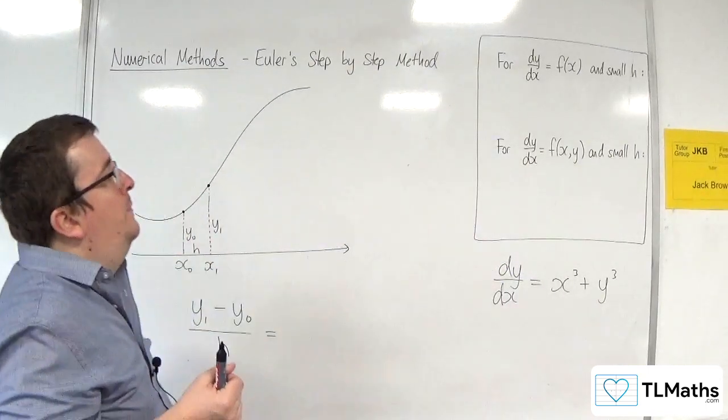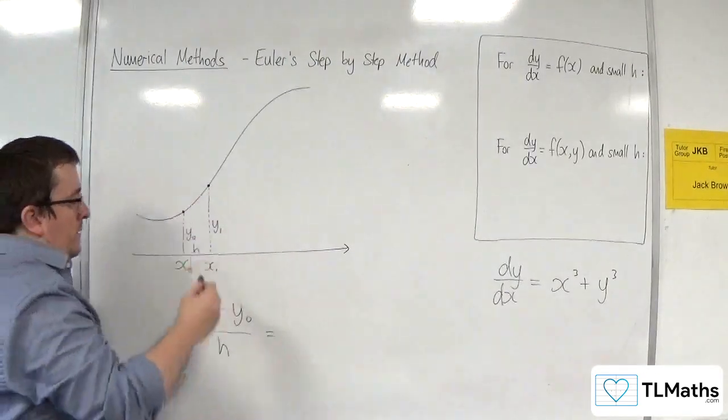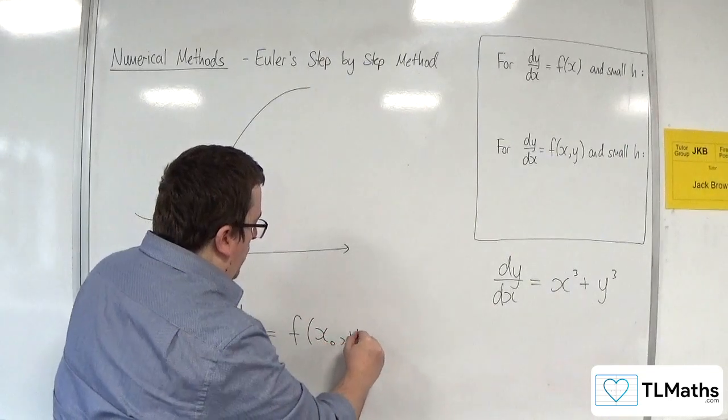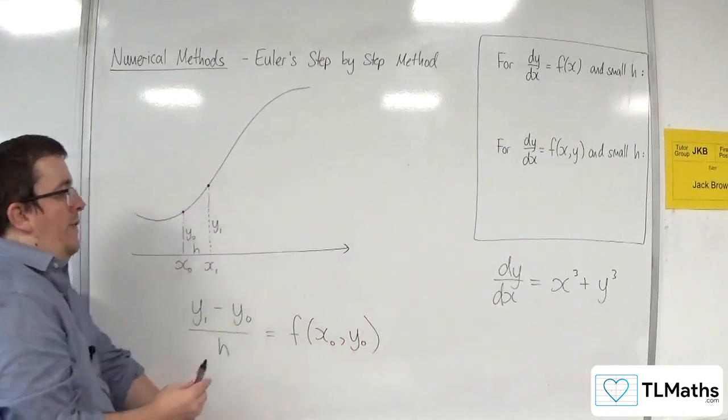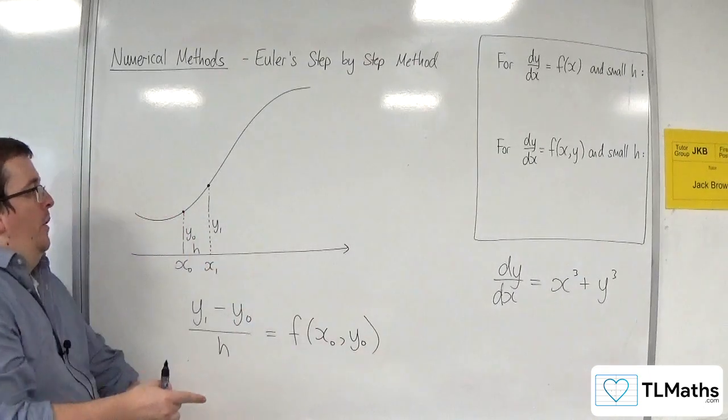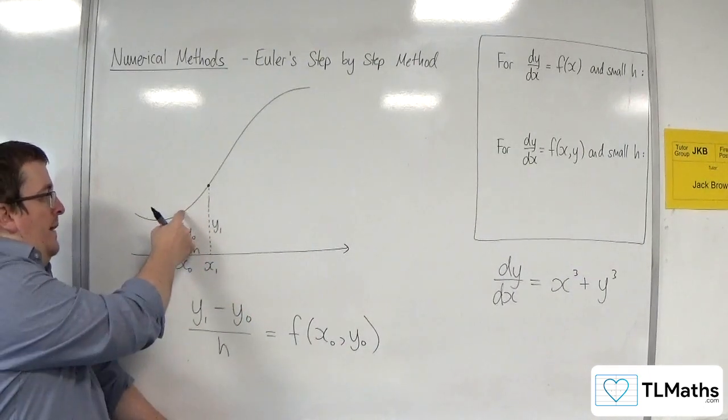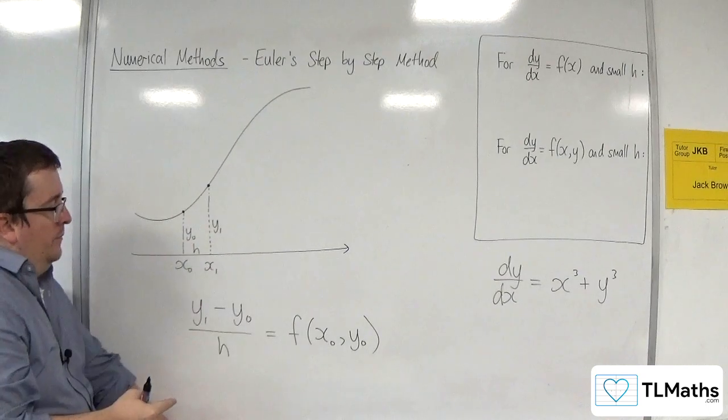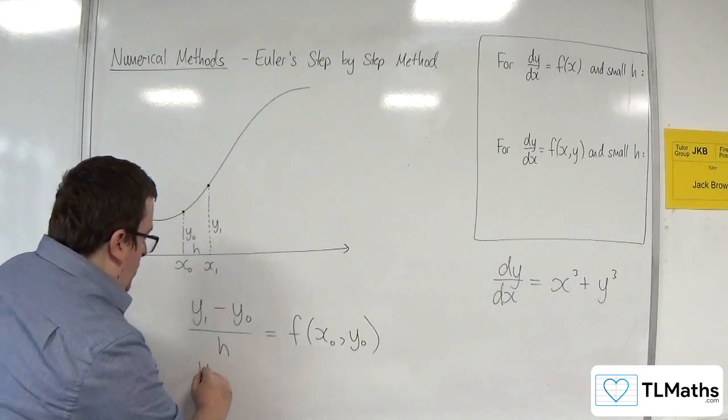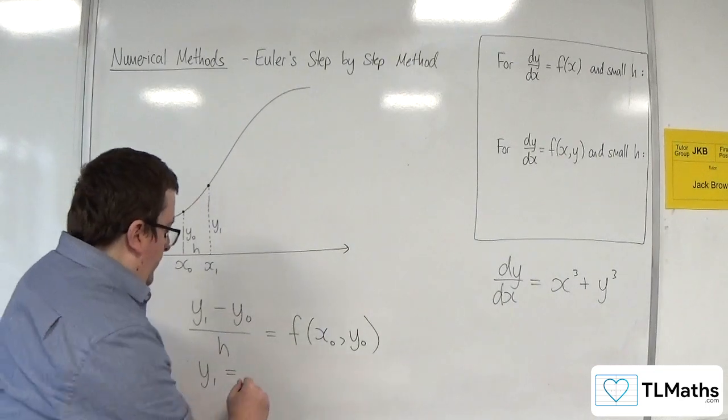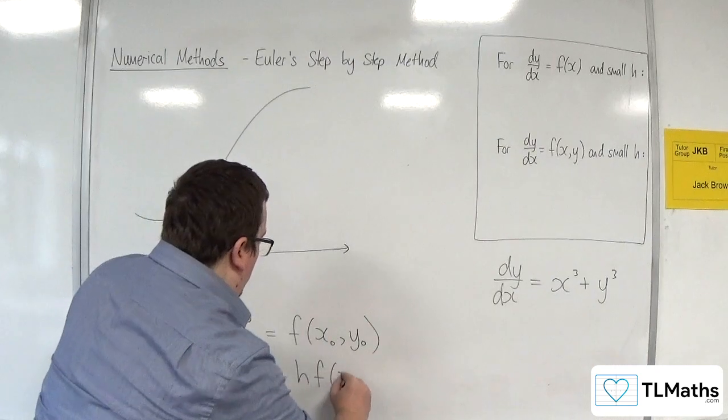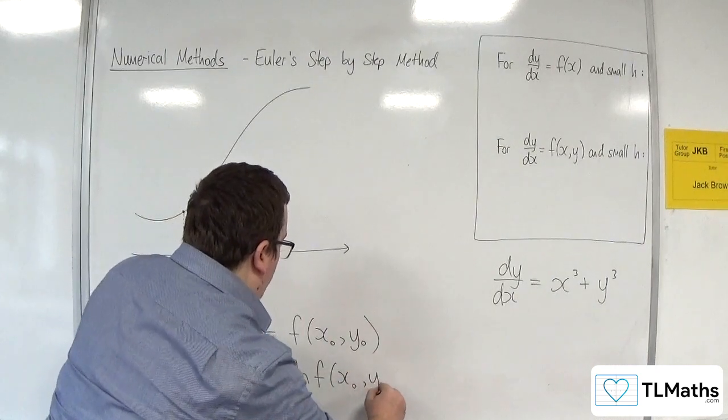So, the gradient of that line can be written as f of x0 y0, where this is the gradient of the curve at the point x0 y0 at that point there. Multiplying through by h and adding y0 to both sides, so I can write y1 is equal to y0 plus h times f of x0 y0.